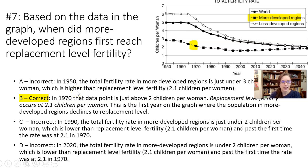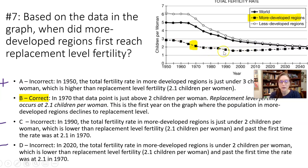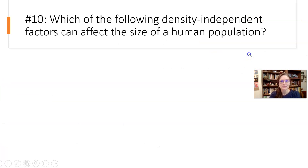When you look at A, which is 1950, the numbers are above two — they're closer to three — so you're going to have an increasing population. In the subsequent C and D, they're both below two, so you're going to have decreasing population rates.